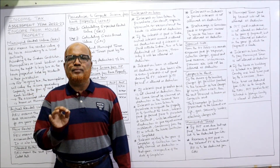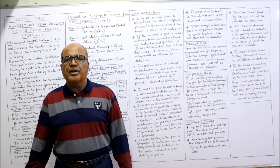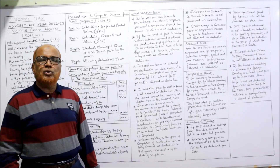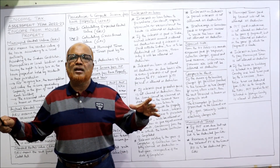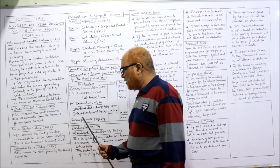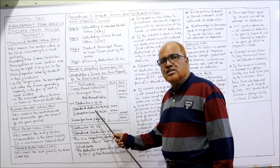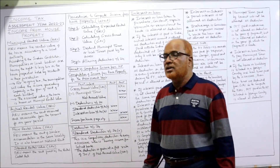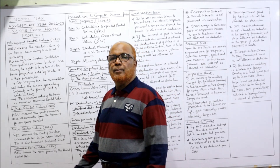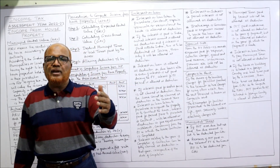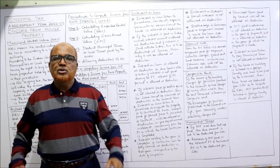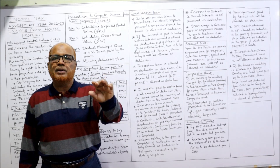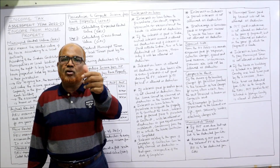Special note: from assessment year 2002-2003 onwards, no deduction is given for repairs, insurance premium, land revenue, ground rent, or collection charges. Before 2002-2003, many such deductions existed under Section 24. Now only two deductions remain — Section 24A and 24B. In problems, if you come across repairs incurred, collection charges, or insurance premium, these are not allowed as deductions currently and should be noted in working notes.